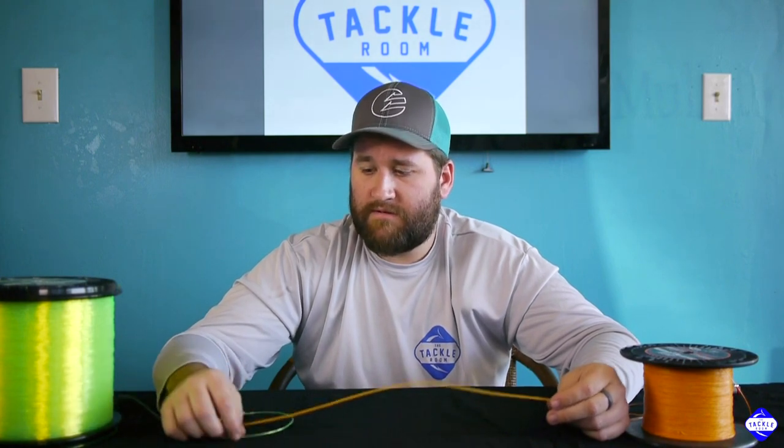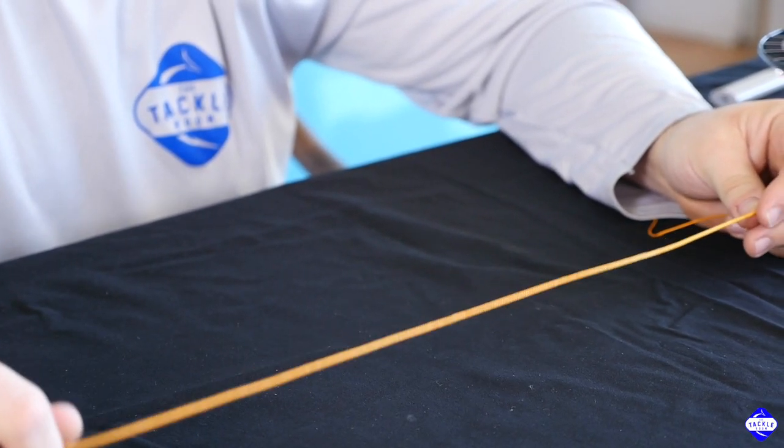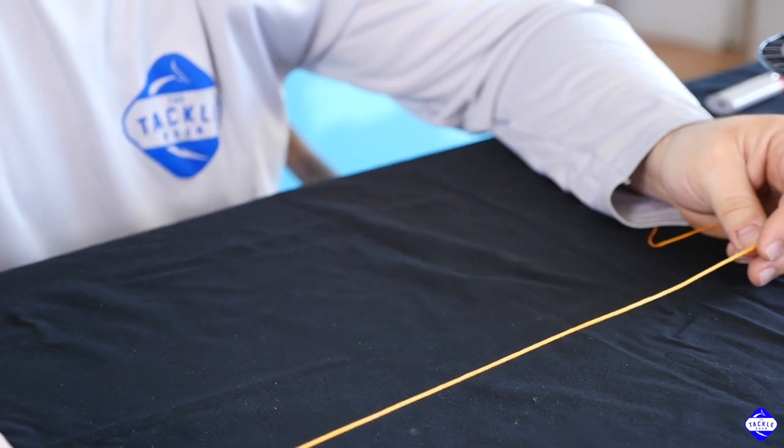It's a very strong connection once the mono's inside. It works like a Chinese handcuff. The tighter the mono pulls against the braid, the tighter the braid sucks around the mono.